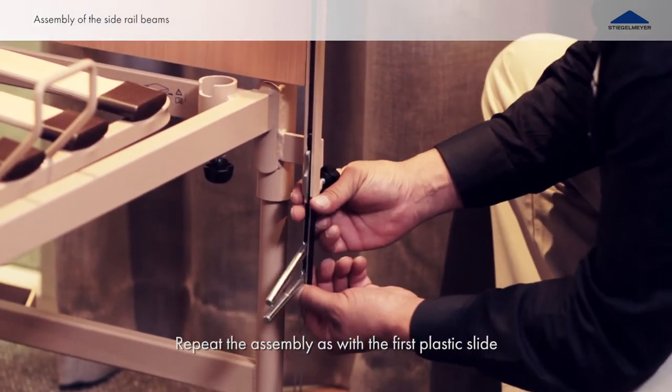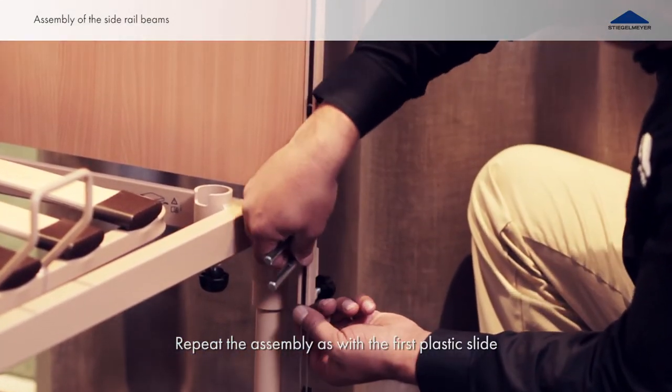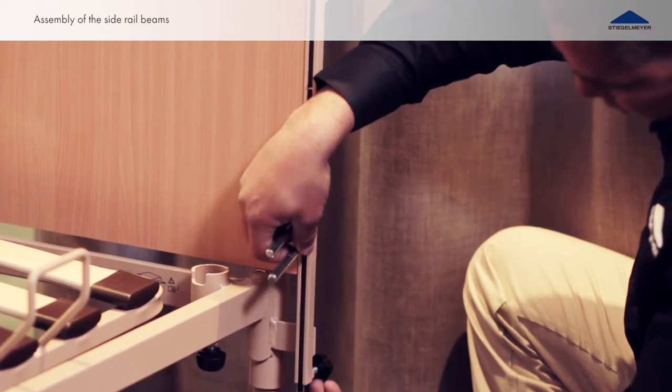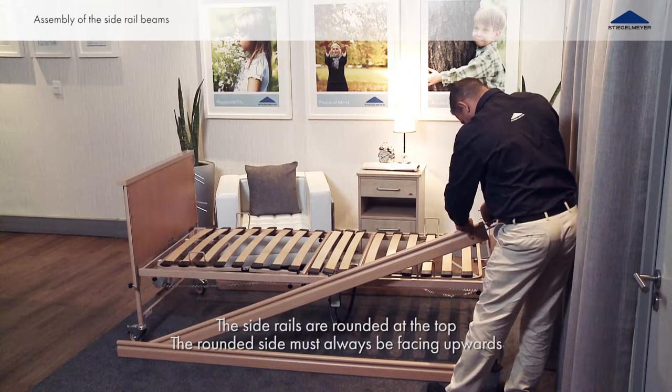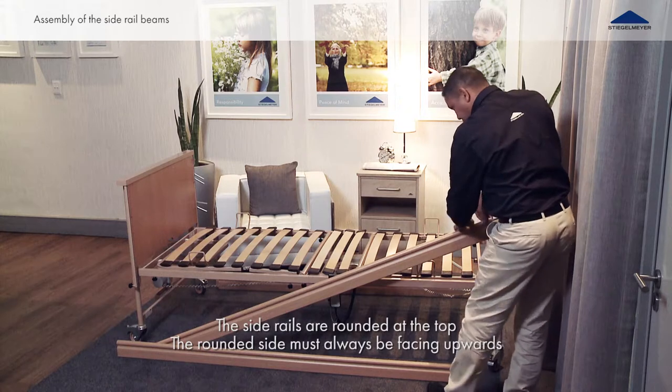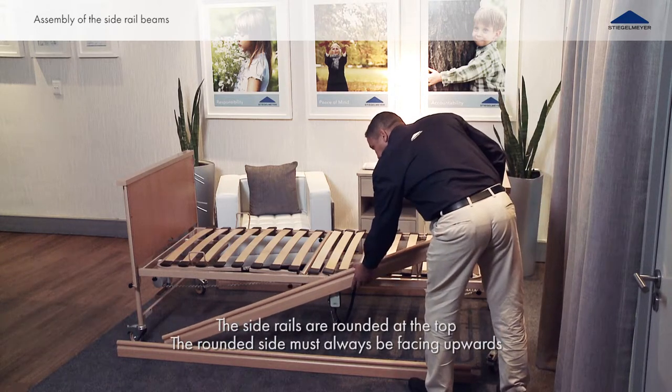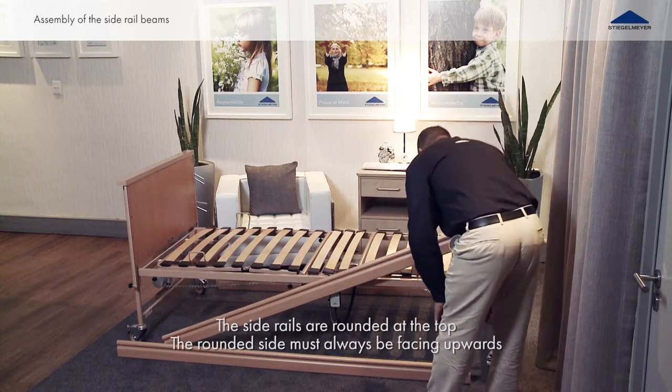Pull the top end of each plastic slide up at the head section until it locks into place. Now place side rail onto the top pair of the metal pins on the head section end board and let the other end of the side rail lie on the floor.